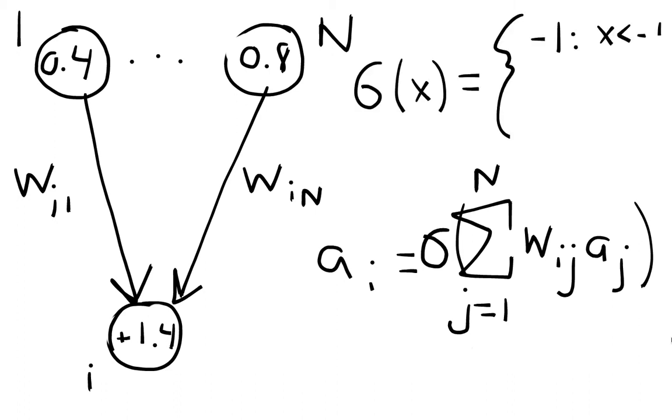In this case, we use a thresholding function. If the computed sum is below -1, we set the neuron value to -1. If the sum is above +1, we set the value to +1. Otherwise, we keep the computed value.